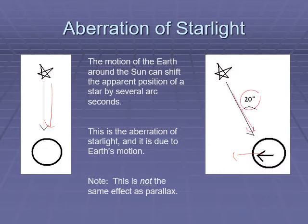So that means as Earth moves around the Sun, star positions are shifted by about 20 arc seconds, always in the forward direction as Earth moves. This shift is just due to the motion of the Earth.